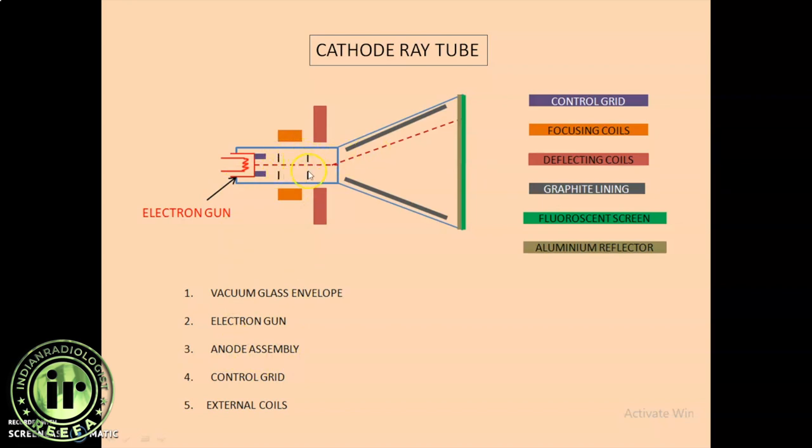Anode assembly is in the form of two sets. One set of anodes are placed nearer to the cathode and the other set of anode is in the form of graphite, inner graphite lining and the fluorescent screen combo. I have labeled all the parts accordingly, according to the colors. You can pause the video, take a minute and try to imply what each stands for and where they are placed.